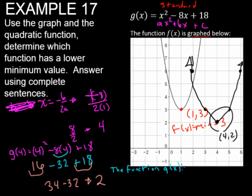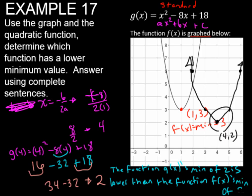So we will say that the function g of x's minimum of 2 is lower than the function f of x's minimum of 3.